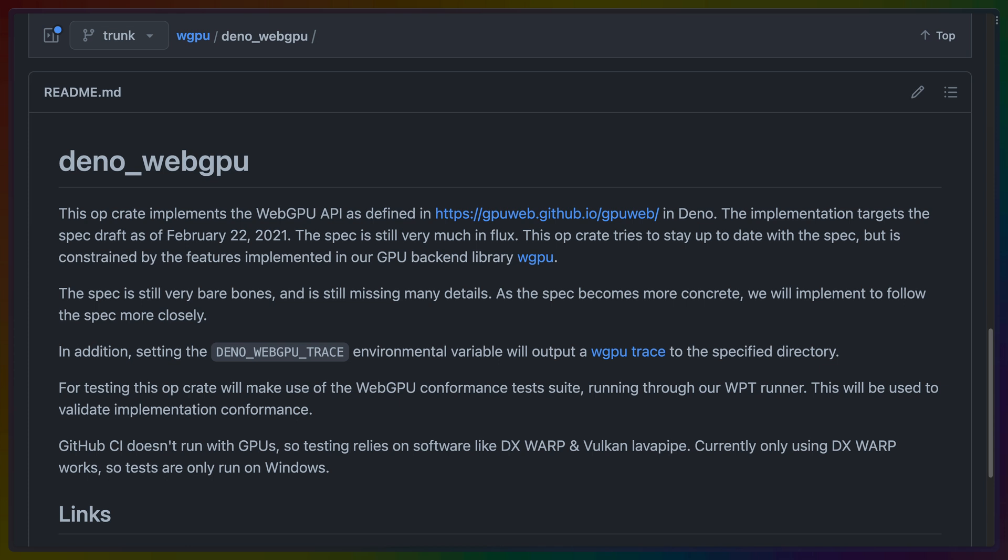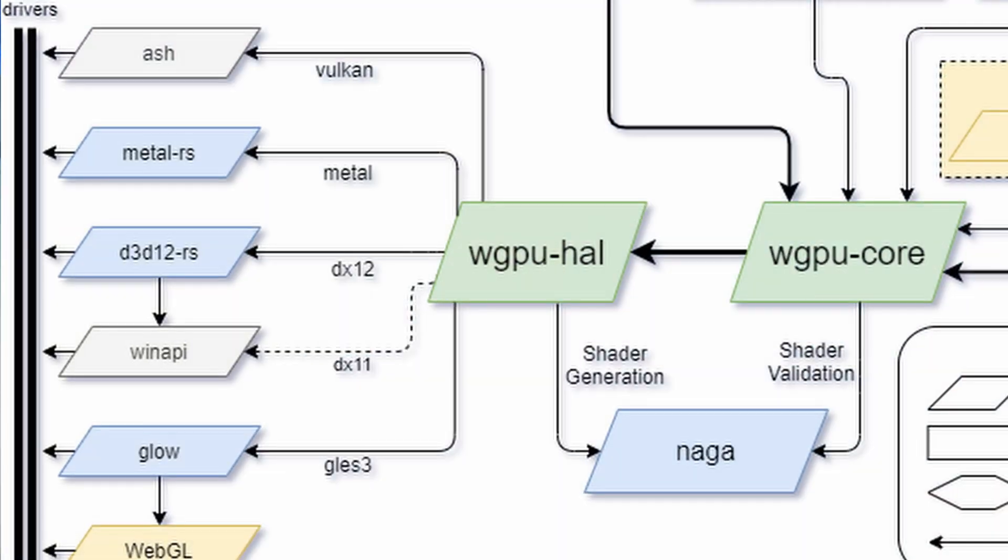WGPU in general builds on WGPU HAL, which is a hardware abstraction layer for graphics APIs. This means that WGPU supports multiple backends like DX12, Vulkan, Metal, and more. The WGPU crate then is the entry point to a vast array of industry-grade functionality beyond just the WebGPU spec.